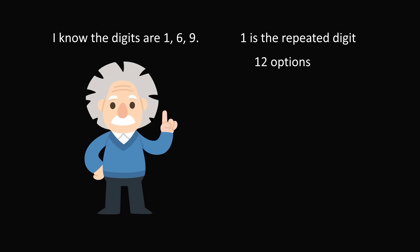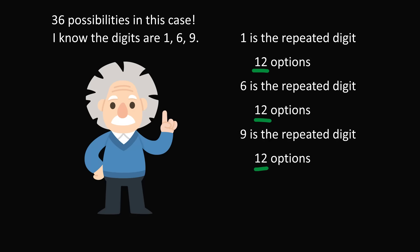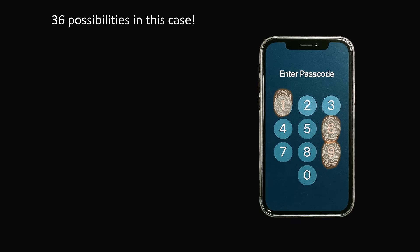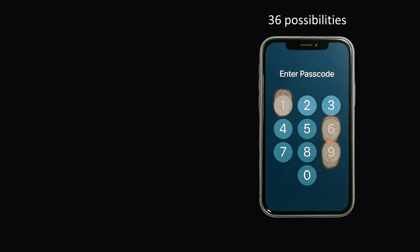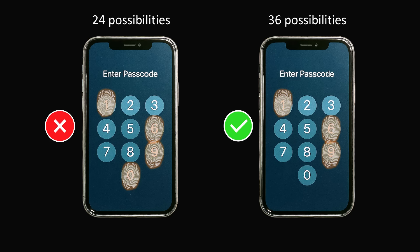But it is possible that 1 is not the repeated digit. 6 might be the repeated digit — we would then have a similar 12 options to check. The same is true if the digit 9 is repeated, then there would be 12 different options to check. So we add up 12, 12, and 12, and we know that there are 36 possibilities in this case. So to summarize: if we have one digit that's repeated and we see exactly three tap prints, there will be 36 different possible passcodes to check. And if instead we had seen four different tap prints, there would only be 24 possibilities. So if we repeat a digit, there will actually be more possibilities to check — your passcode will be harder to guess just from the tap prints.